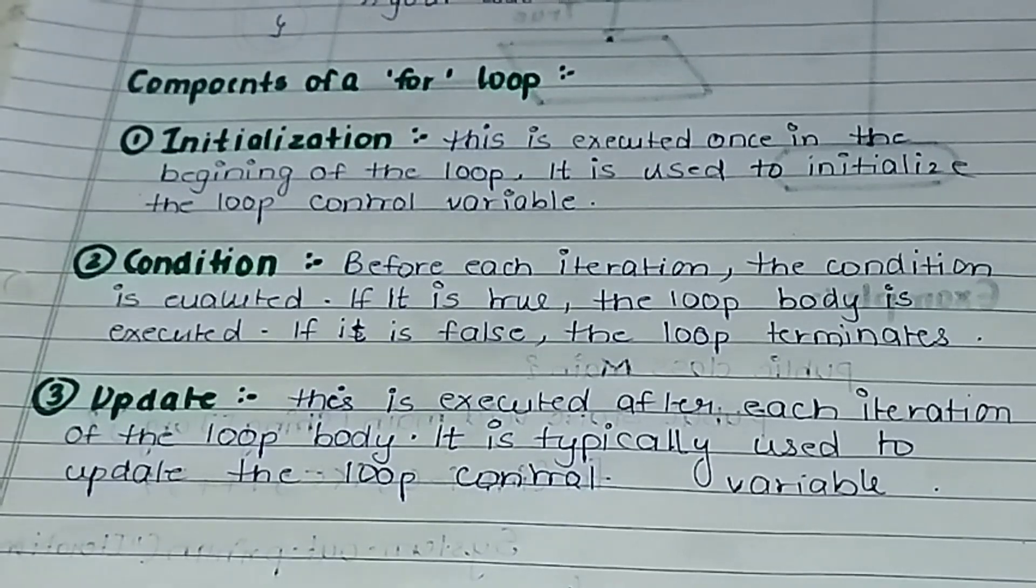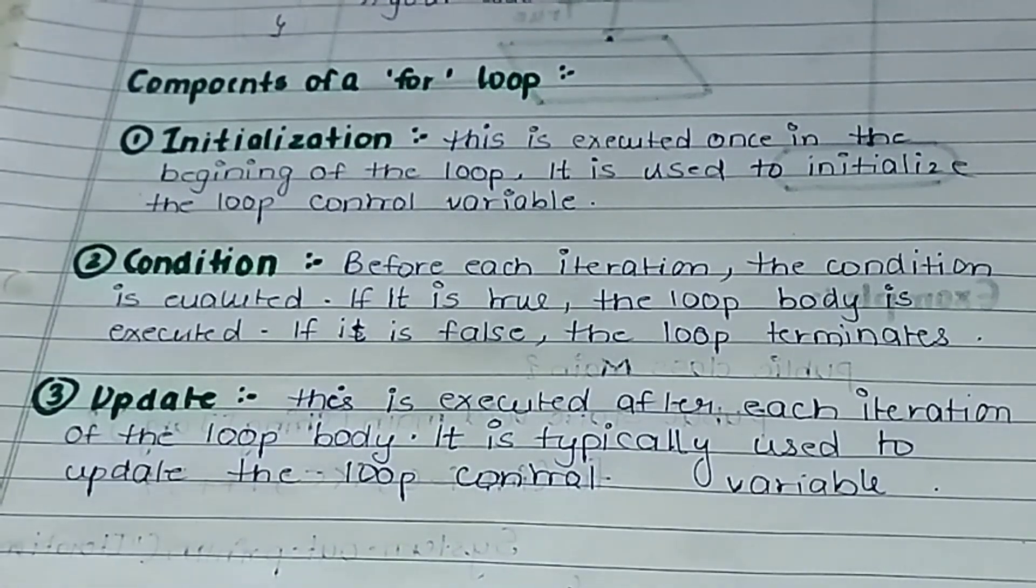And the last one is update. This is executed after each iteration of the loop body. It is typically used to update the loop control variable. So update - instead of this we can write increment or decrement. We use update because we first initialized the value, so that was the initial value. Throughout the code that same value won't stay, we need to change that value. To update that value we either increase it or decrease it.